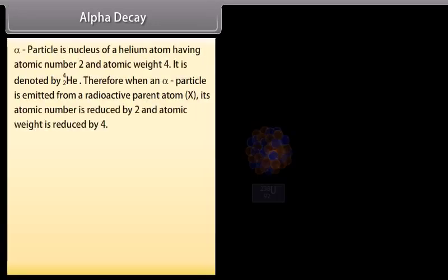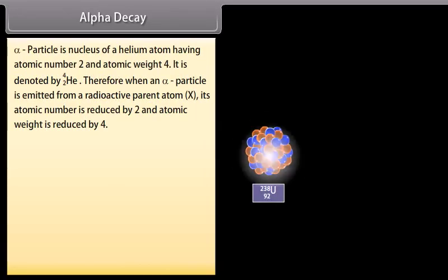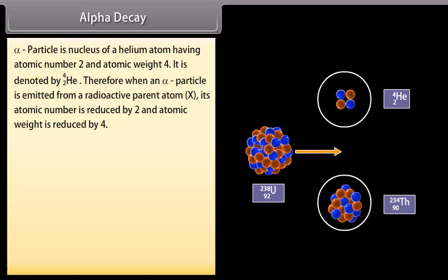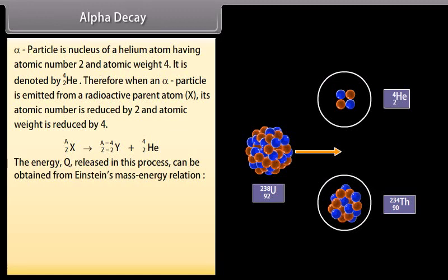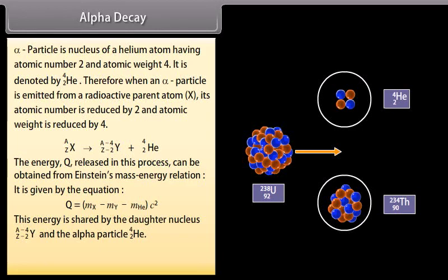Alpha decay. Alpha particle is nucleus of a helium atom: atomic number 2 and atomic weight 4. It is denoted by... Therefore, when an alpha particle is emitted from a radioactive parent atom X, its atomic number is reduced by 2 and atomic weight is reduced by 4. It can be demonstrated as... The energy Q released in this process can be obtained from Einstein's mass energy relation. It is given by the equation Q is equal to Mₓ minus Mᵧ minus Mₕₑ into c². This energy is shared by the daughter nucleus and the alpha particle.